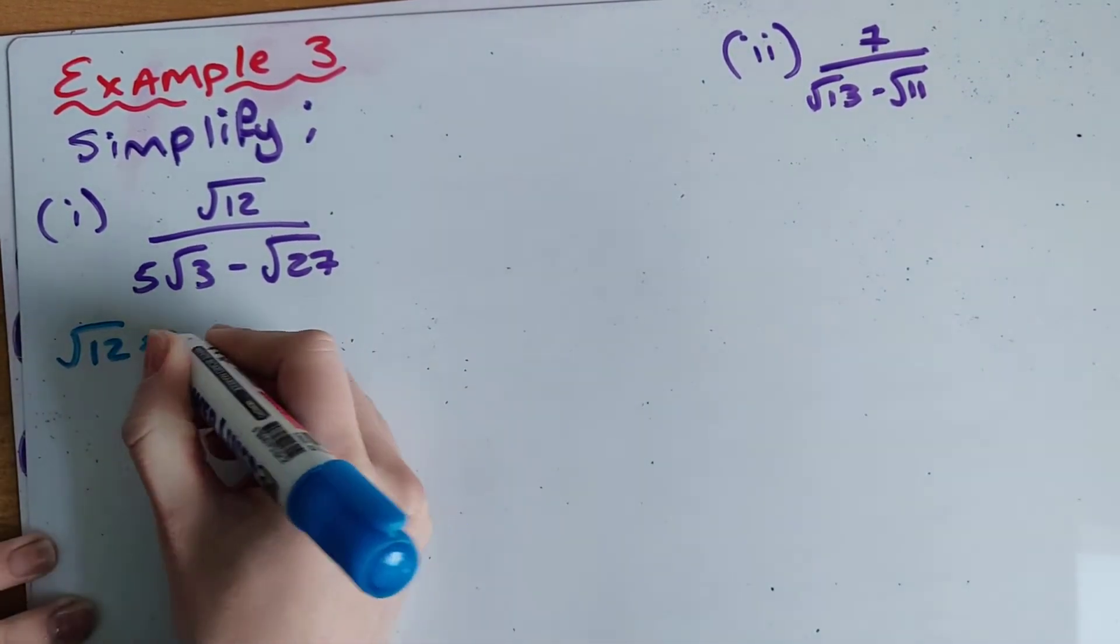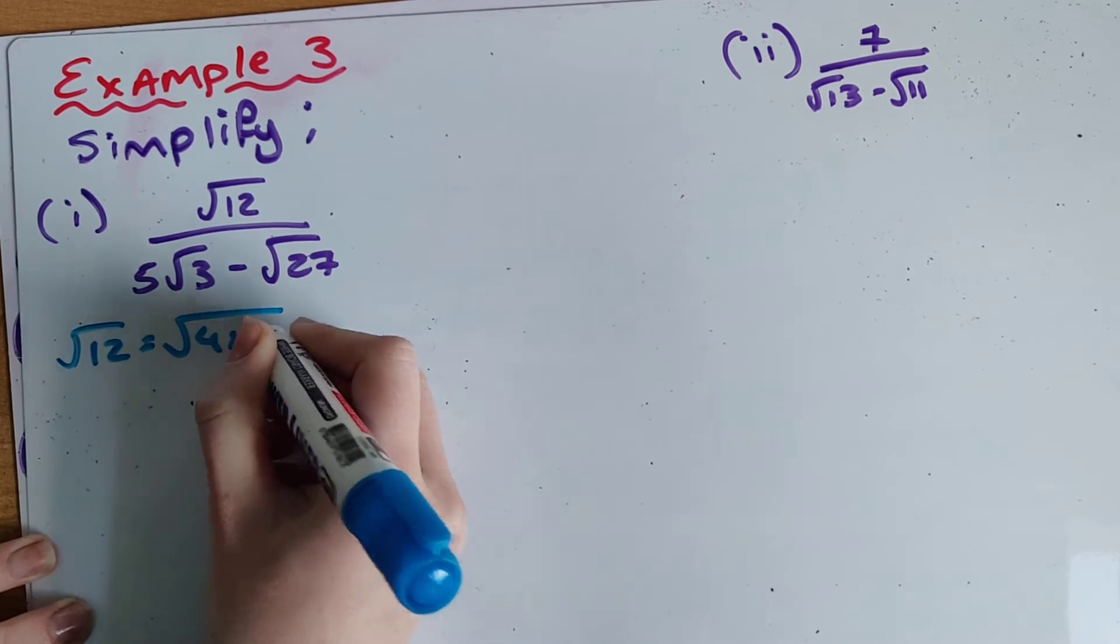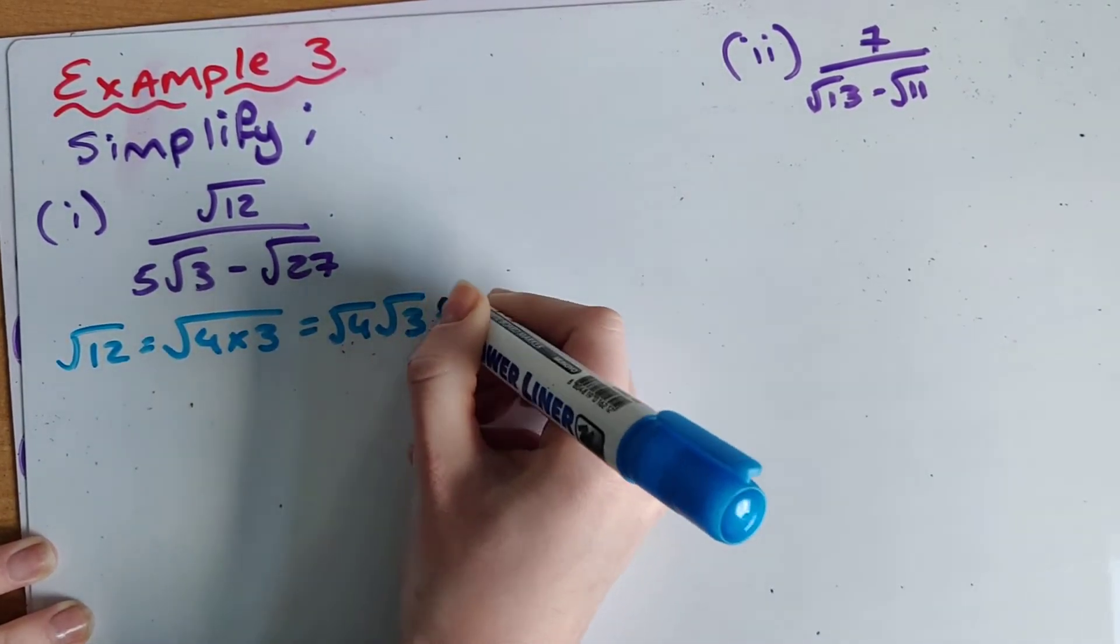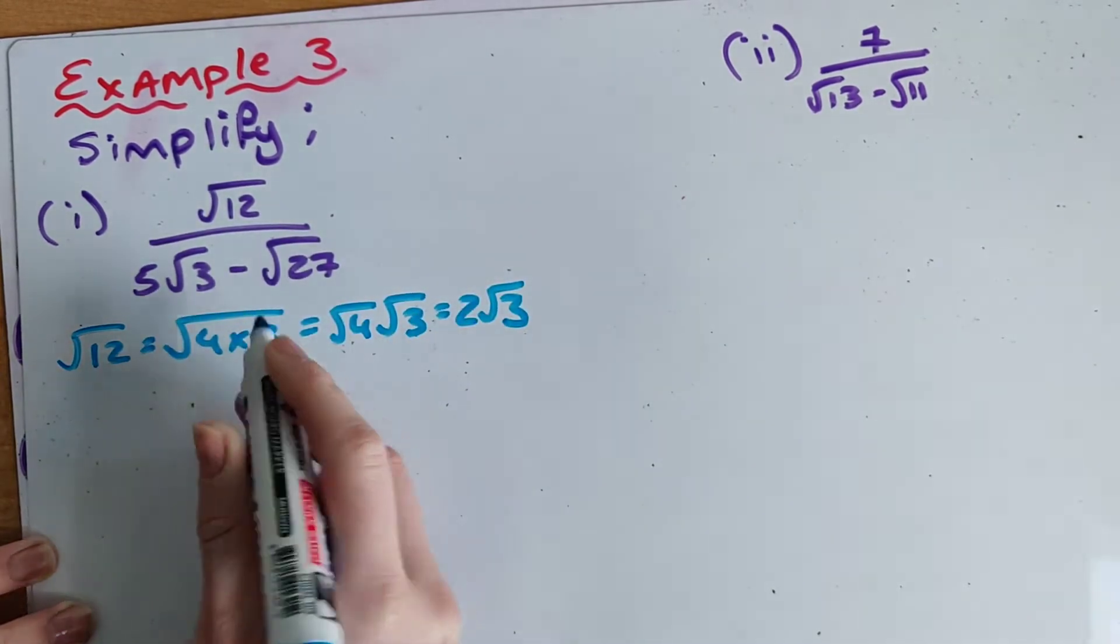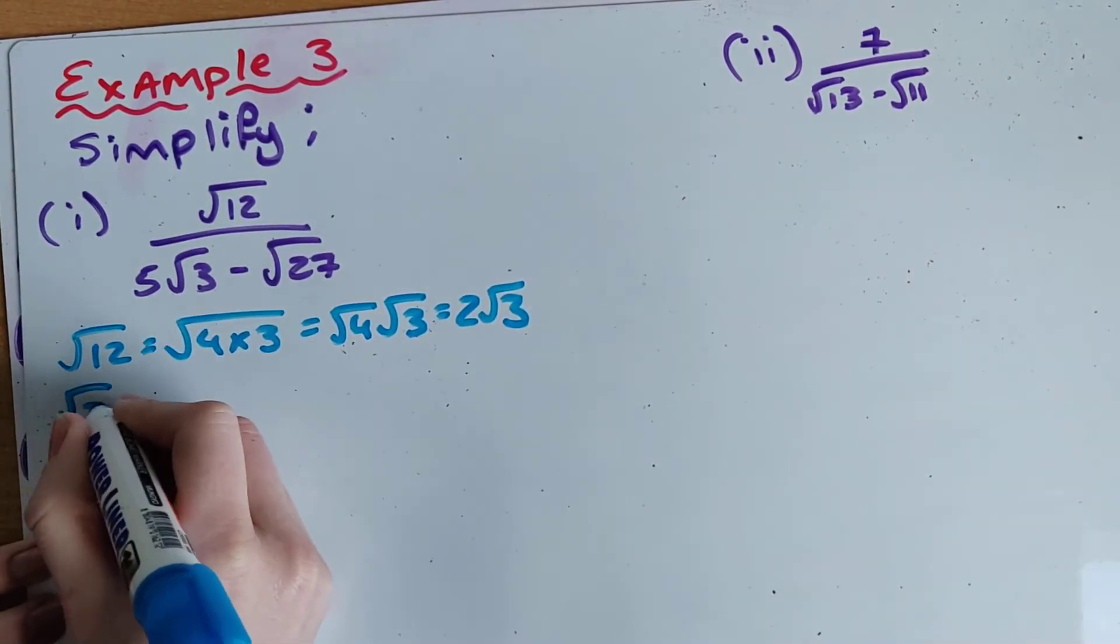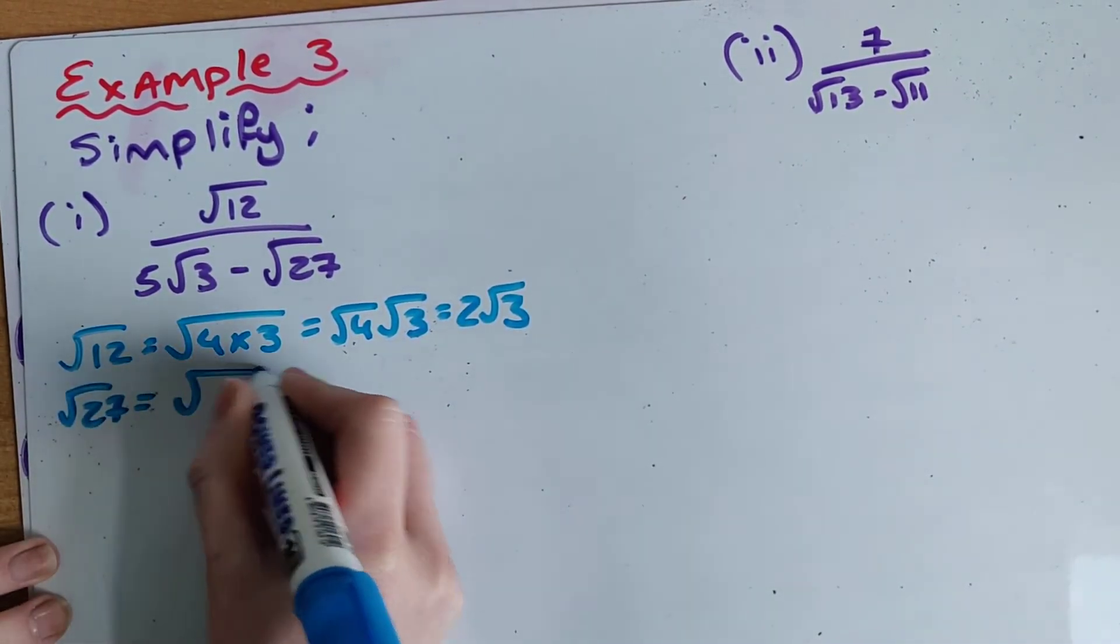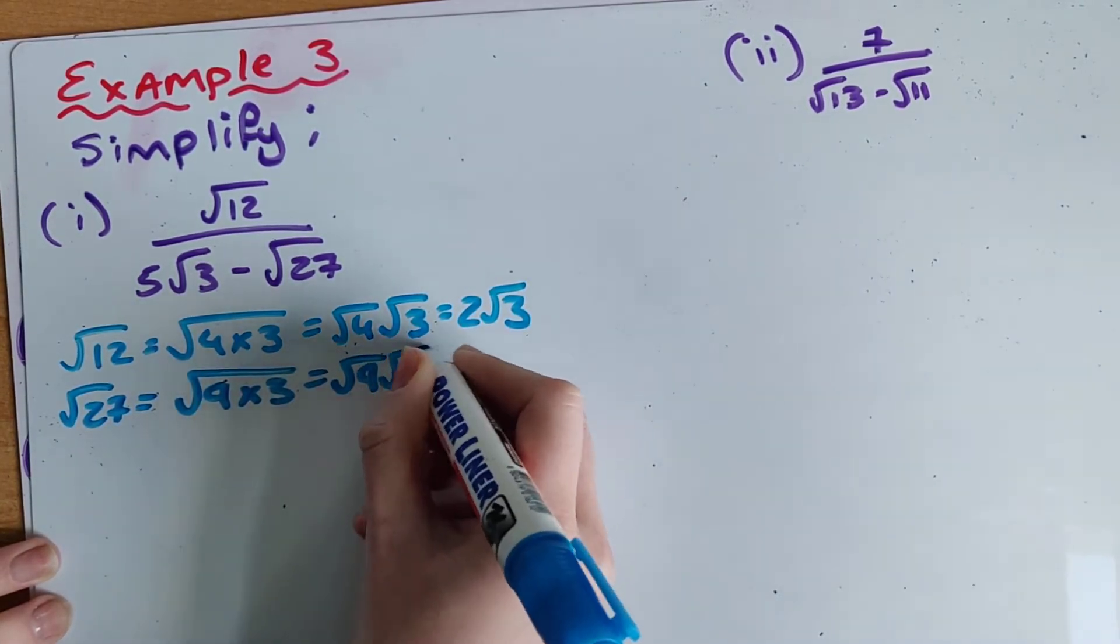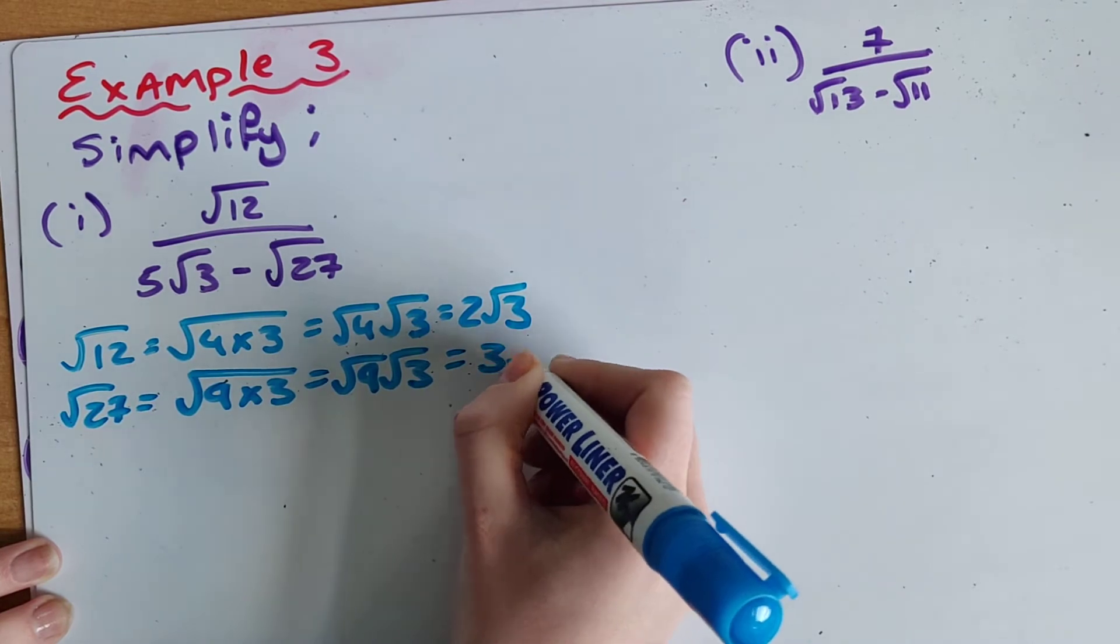So root 12 is really 4 times 3 which means it's really root 4 by root 3 which is really 2 root 3. On the bottom here I have root 27 which is the same as having 9 times 3 which is the same as root 9 times root 3 which is really 3 root 3.